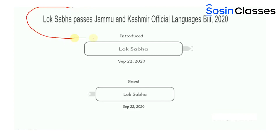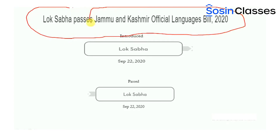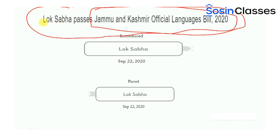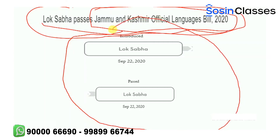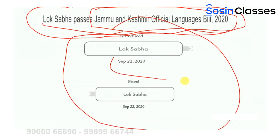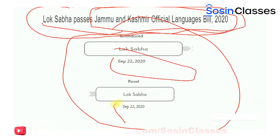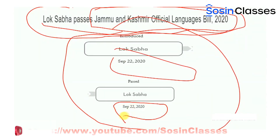Moving on, the second bill under focus for today is the Jammu and Kashmir Official Languages Bill 2020. The news headline reads: Lok Sabha passes the Jammu and Kashmir Official Languages Bill 2020. This bill was introduced and passed in the Lok Sabha on the same day, that is 22nd of September 2020.